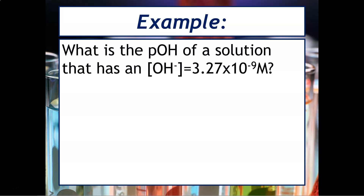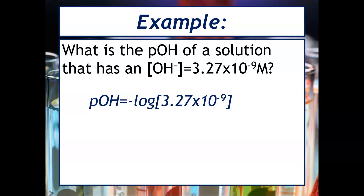Here's an example. What is the pOH of a solution that has an OH minus concentration equal to 3.27 times 10 to the minus 9 molar? We use the pOH equation: pOH equals negative log of the OH minus concentration. Plug in 3.27 times 10 to the minus 9, and you should get a value of 8.49. Again, pOH, just like pH, is a unitless quantity.